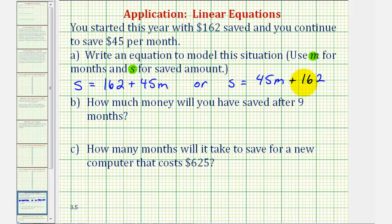There's one more thing to mention here. Notice the rate of change, or the slope of the line if we were to graph this, would be positive 45. The reason it's positive is because we're saving $45 each month, or we can say that S increases $45 each month.